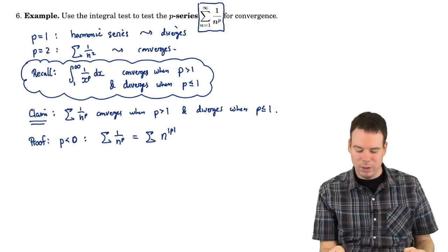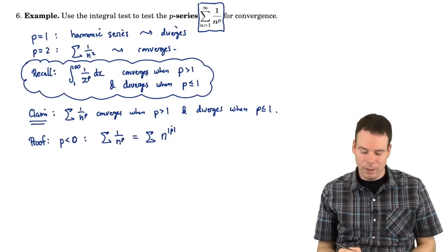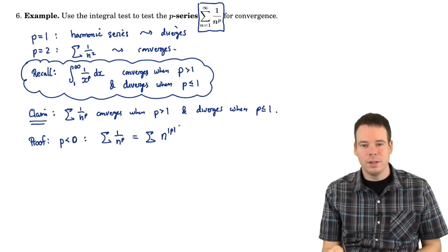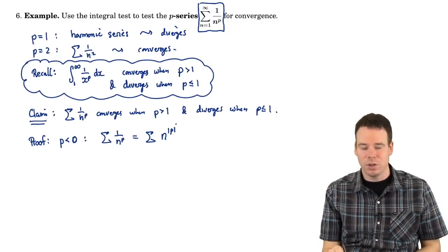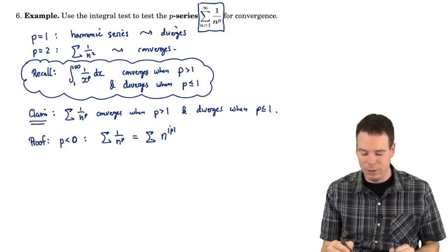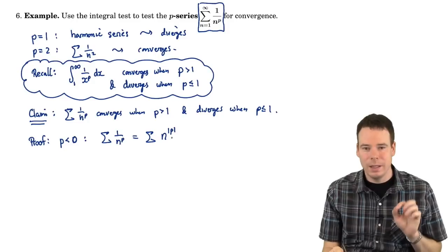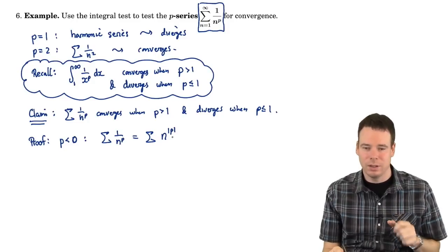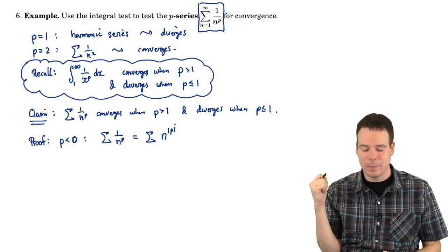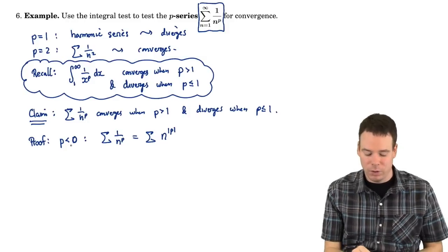Now these terms are not decreasing, so the underlying function is not a decreasing function. So I can't apply the integral test. This is the issue here. I can't apply the integral test unless the terms are decreasing and satisfy the other hypotheses as well. These terms aren't decreasing. Integral test is out, can't use it. So I need another alternative argument in this case.